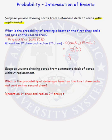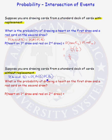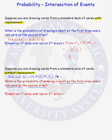What happens to the probability if instead of drawing with replacement, we select cards without replacement? Once we draw the first card, we do not put it back. Are the events independent now? The probability of the second draw depends on what you got on the first draw, so we no longer have independent events. We must use the formula P(A∩B) = P(B|A) × P(A). We want the probability of a heart on the first draw and a red card on the second draw, which equals P(red on 2nd | heart on 1st) × P(heart on 1st).